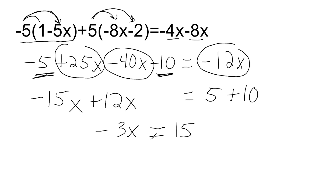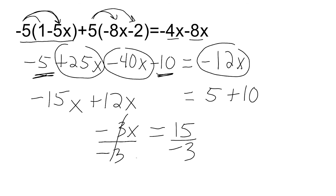Combining negative 15x and positive 12x gives us negative 3x. Combining 5 and 10 gives us 15. Using mental math, x is going to be negative 5 because negative 3 times negative 5 is positive 15. But to show the work, we divide both sides by negative 3, and that gives us x equals negative 5.